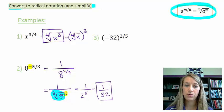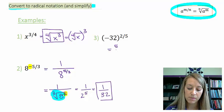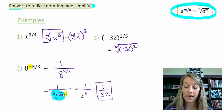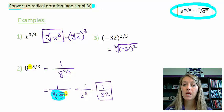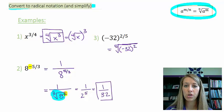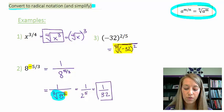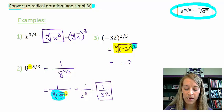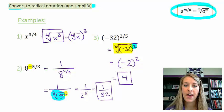Example three: negative 32 to the two-fifths power. Rewrite as the fifth root of negative 32 squared, keeping parentheses around the negative 32 since the exponent applies to all of it. I choose to take the fifth root first rather than squaring first, since squaring negative 32 would require a calculator. The fifth root of negative 32 is negative 2, and then negative 2 squared is positive 4. So the simplified answer is 4.